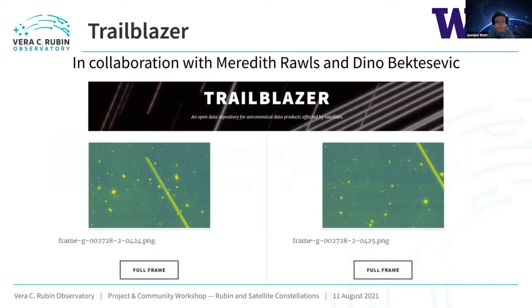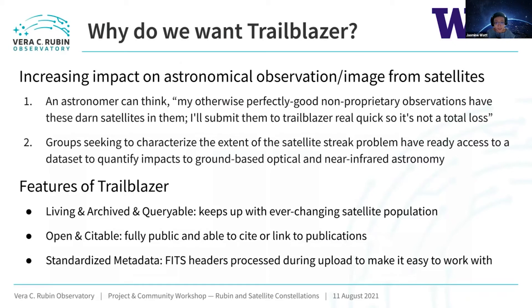Hi everyone, I'm Jasmine, working with Meredith Rawls and Dino Bektasovic. I'm working on Project Trailblazer — an open data repository for astronomical observations affected by satellite streaks. Today I'll talk about why we want Trailblazer, how it works, and our current progress. The main reason is that many satellites are now in the sky, they're bright and basically randomly go into your observations. Since it's very hard or inefficient to dodge this impact, Trailblazer collects those affected images and makes them available for people to study the impact.